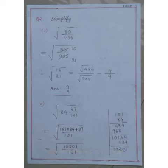If I divide both numerator and denominator by 5, I get 16 by 81. So, I have to find the square root of 16 and 81 separately. 16 is 4 into 4 and 81 is 9 into 9. Therefore, the answer is 4 by 9.